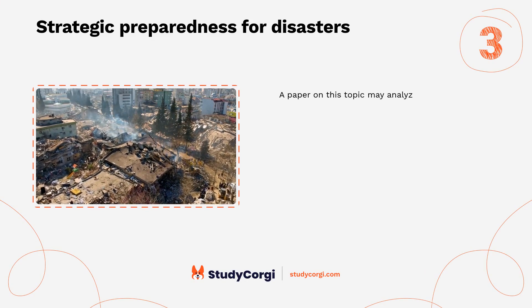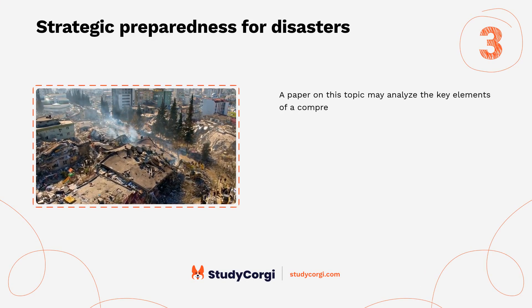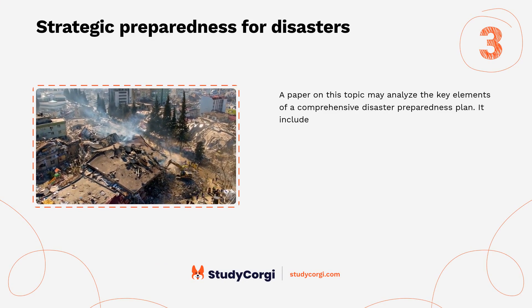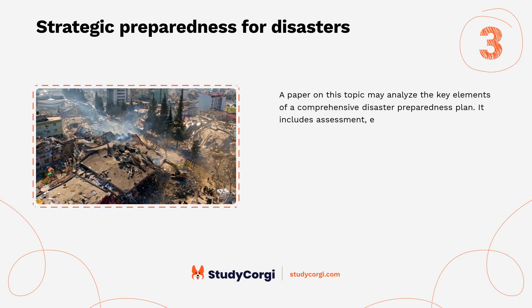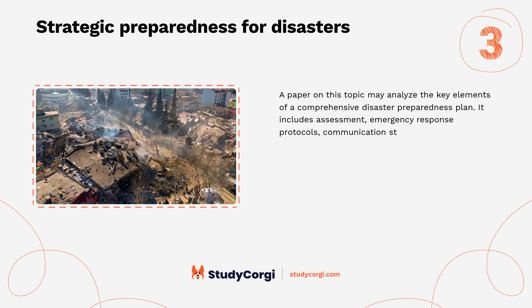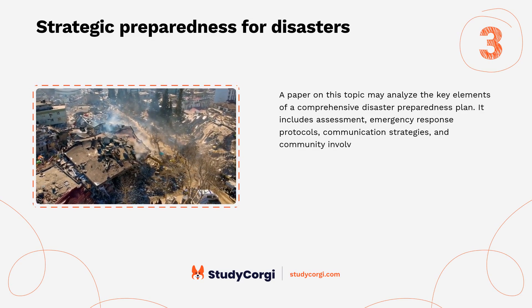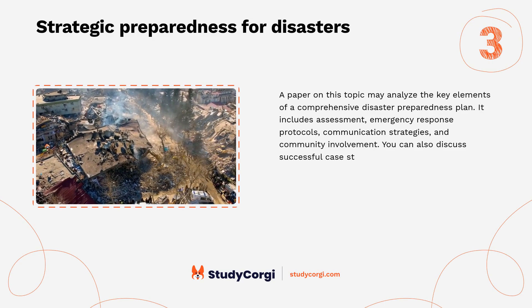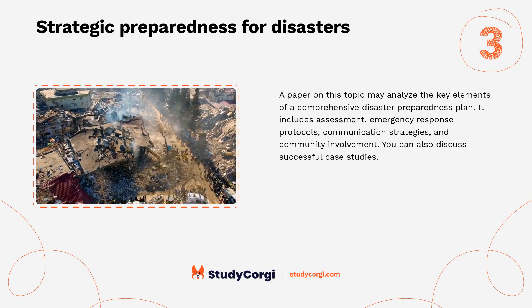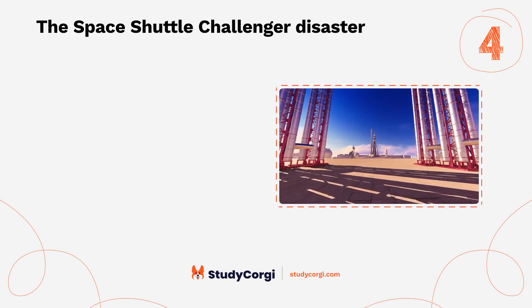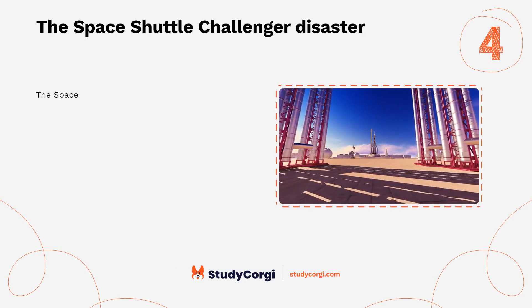Strategic preparedness for disasters. A paper on this topic may analyze the key elements of a comprehensive disaster preparedness plan. It includes assessment, emergency response protocols, communication strategies, and community involvement. You can also discuss successful case studies.